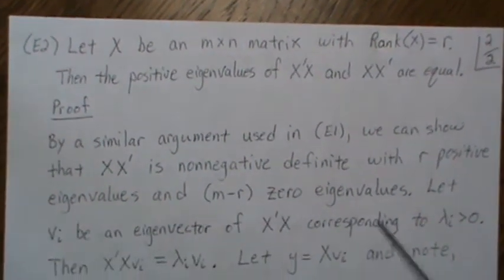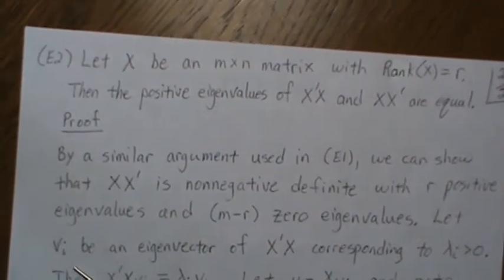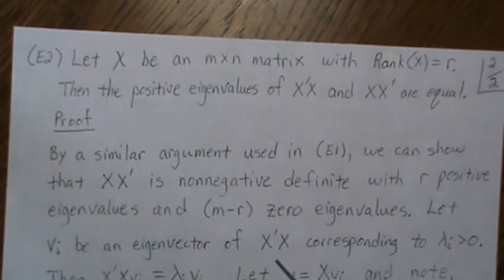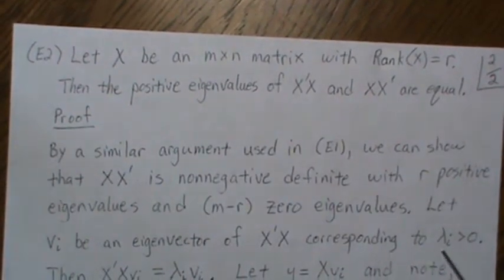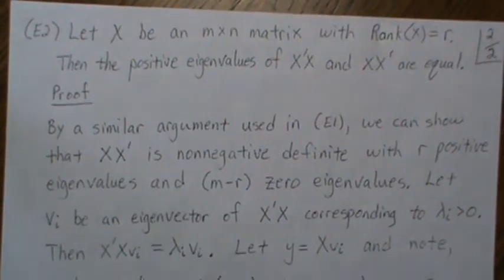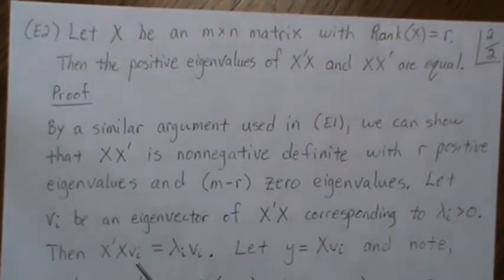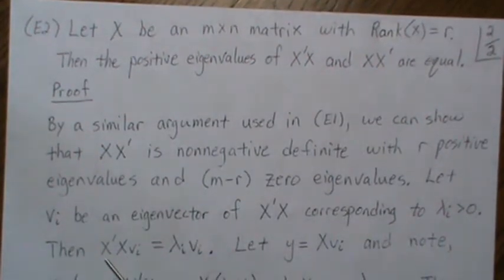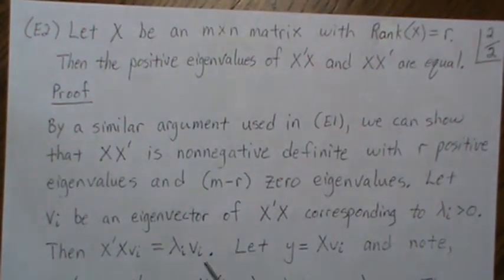So let V_i be an eigenvector of X prime X corresponding to a positive eigenvalue. Then this holds. Since V is an eigenvector of X prime X, then it is equal to lambda I V_i, where this is the eigenvalue corresponding to that eigenvector. So now let Y equal X V_i.